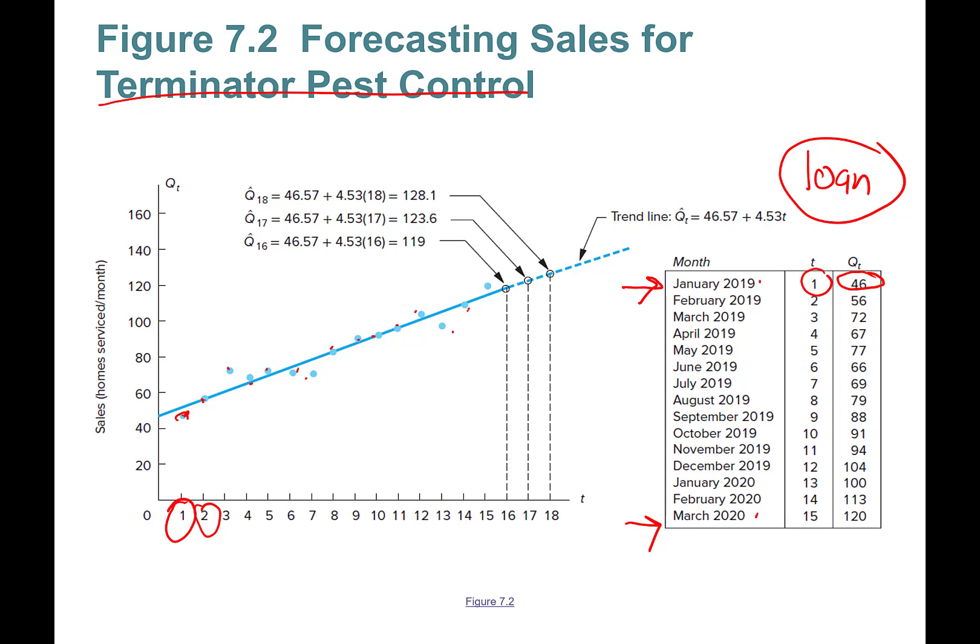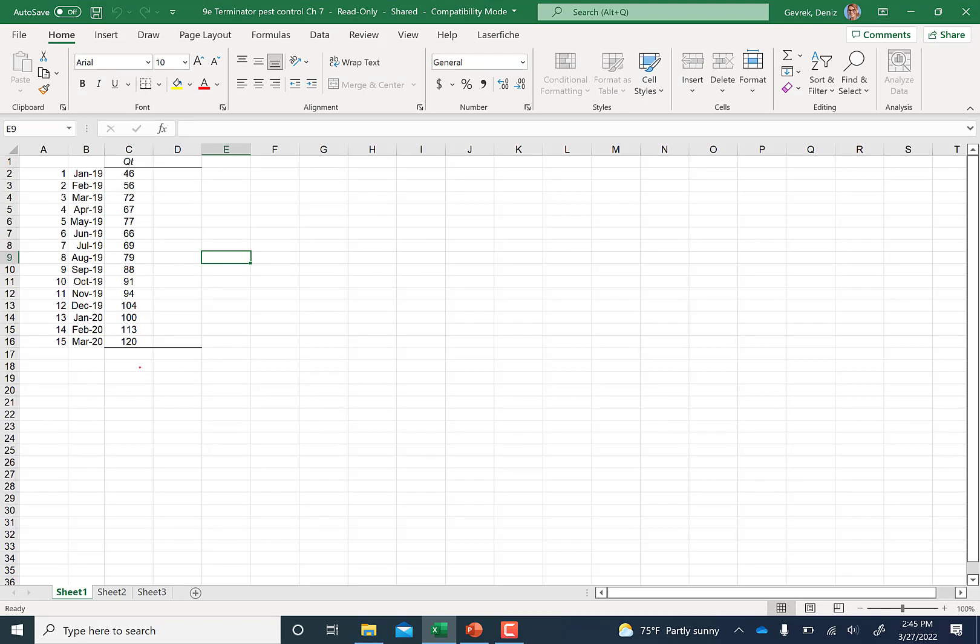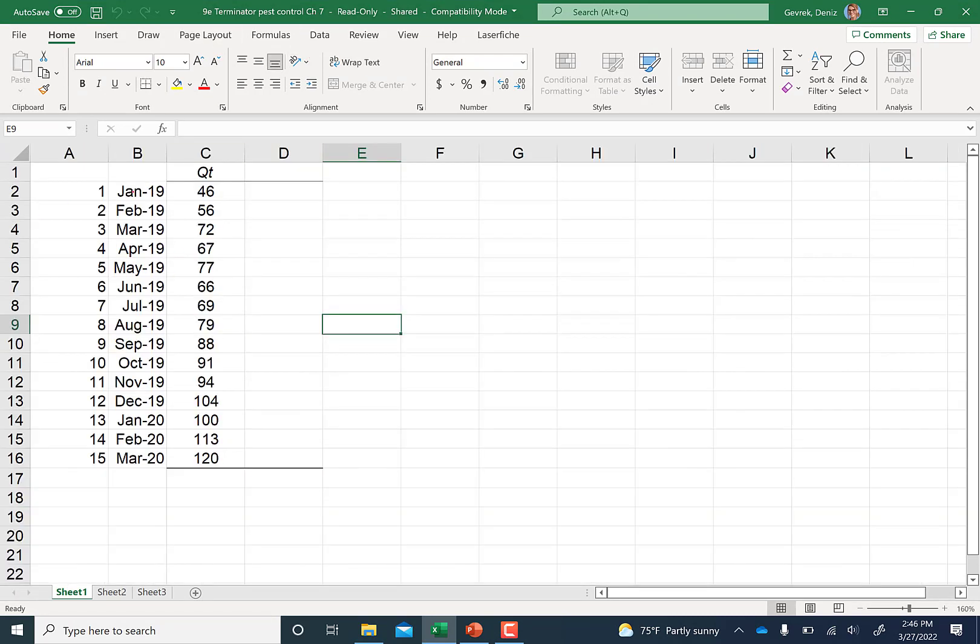Here is the Terminator Pest Control Chapter 7 dataset. January 19, February 19, March till March of 2020. You have 15 observations. These are your sales or number of houses serviced with pest control. I'm going to create a trend variable. Instead of using January 19, you can't really enter this as a value, but this is period 1, period 2, period 3. I'm going to choose this, double click, and it will go down.